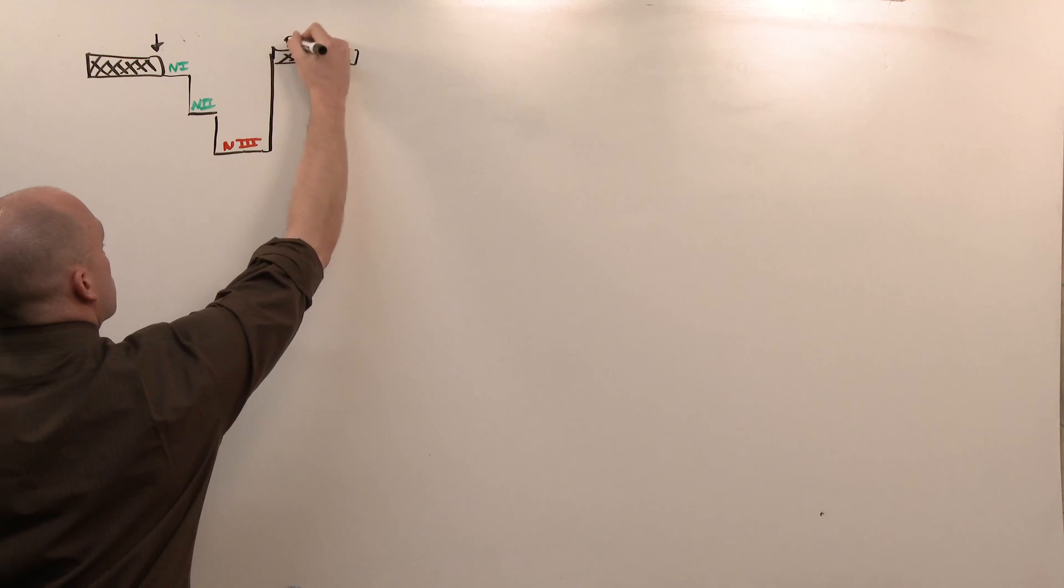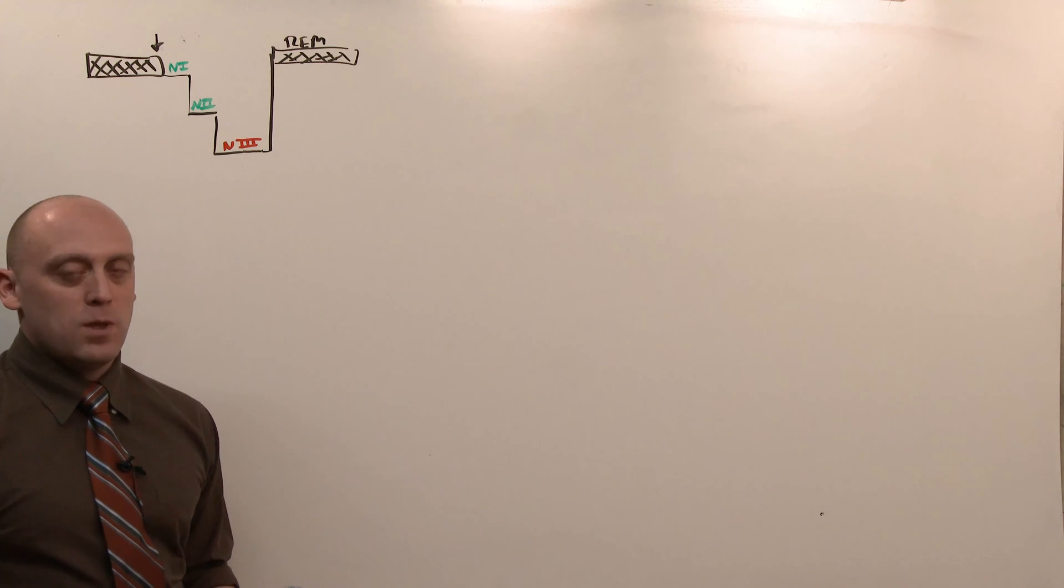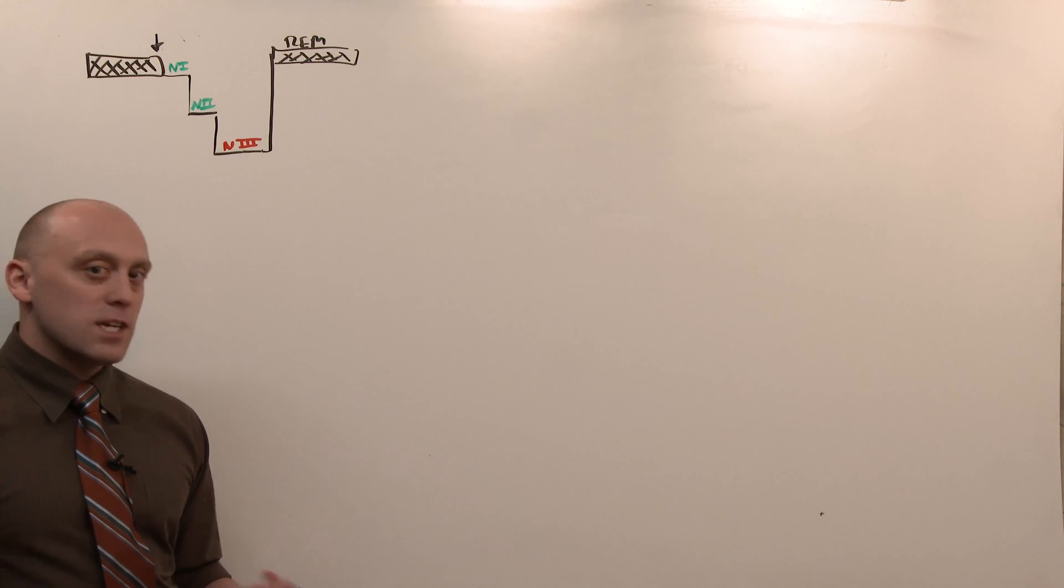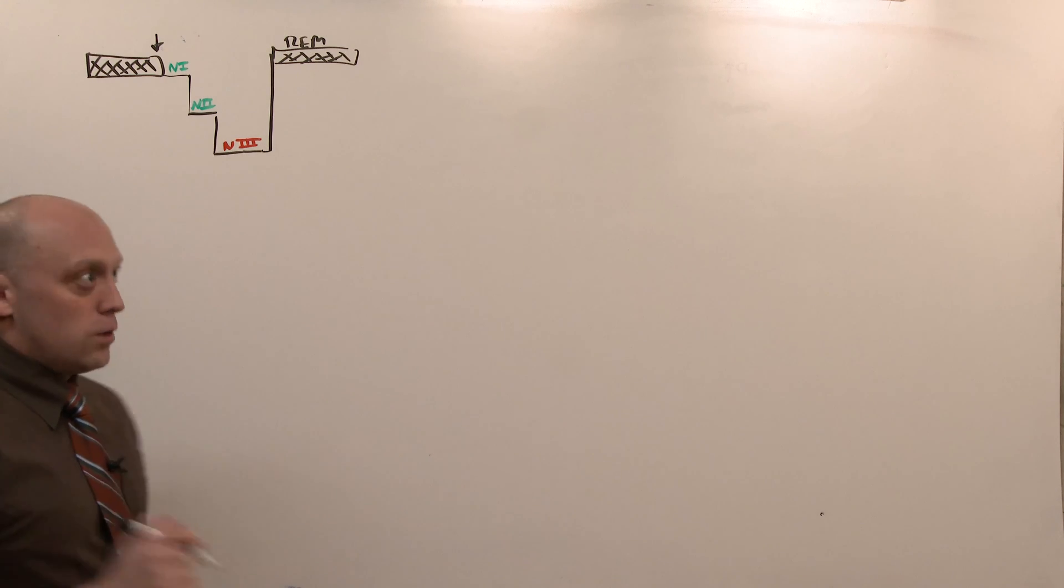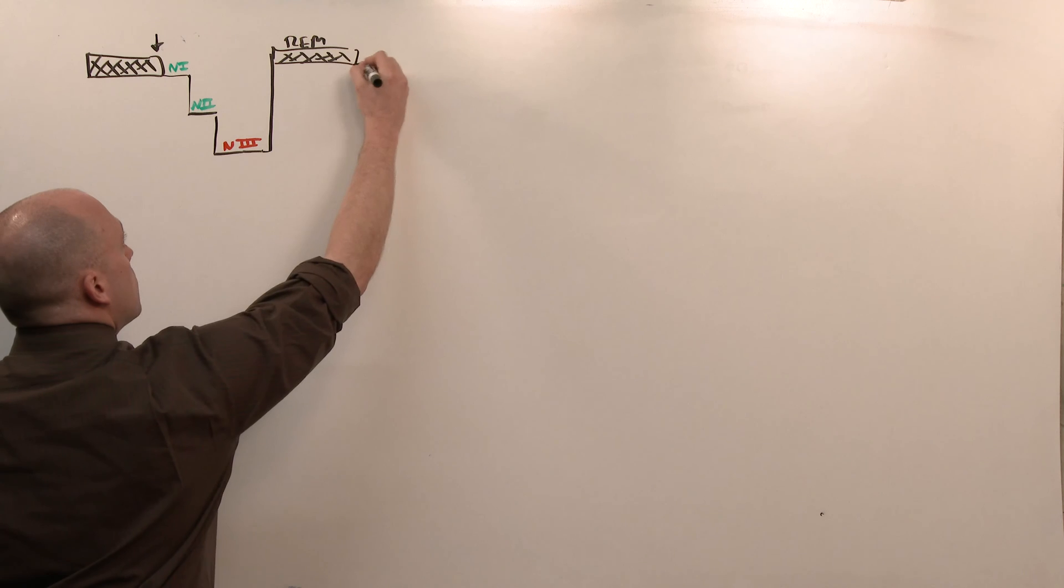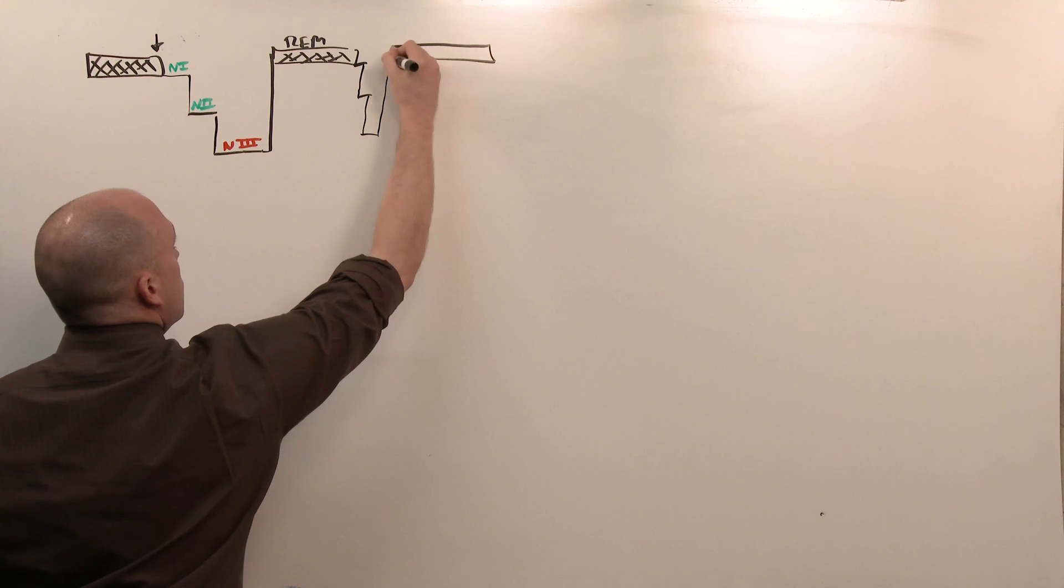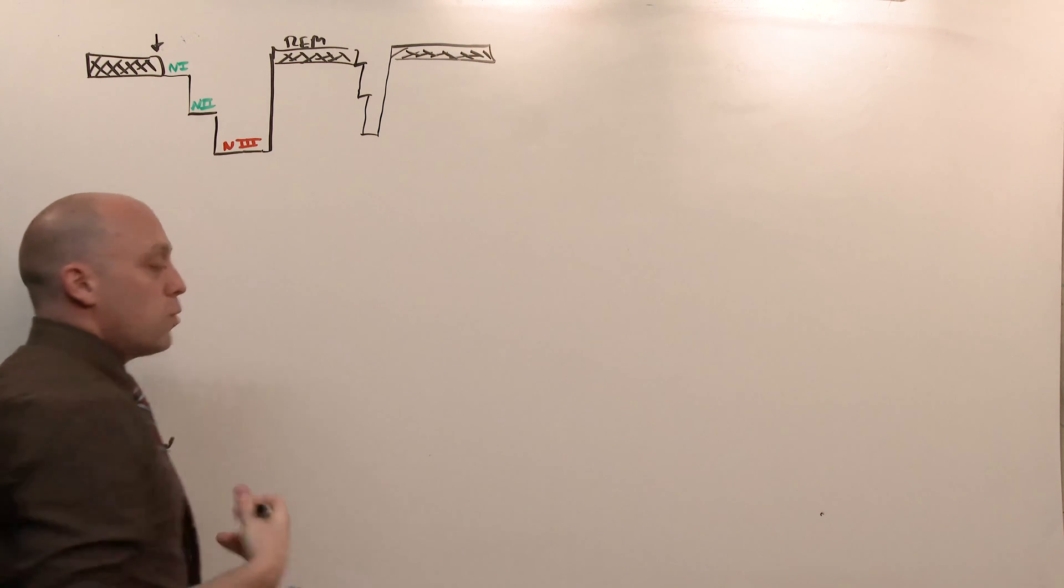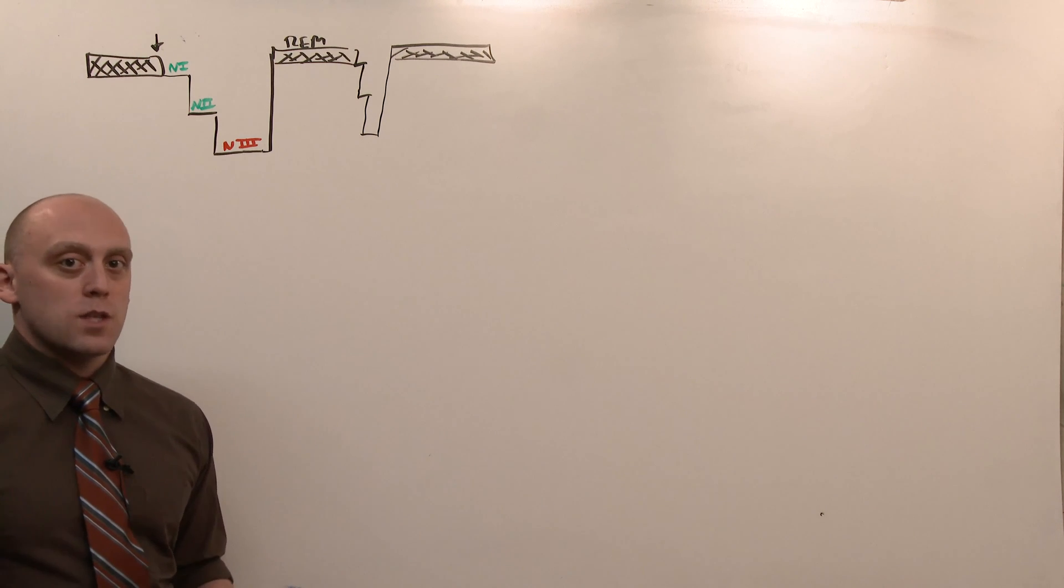REM is the restful sleep. REM is called REM because it is rapid eye movement on EMG. The others are non-REM sleep. REM is the most restful period where your brain engages memories, processes the day, and actually gets restful sleep. The longer you are in sleep, the shorter the duration of the non-REM sleeps and the longer the duration of REM. The longer you are asleep, the more time you'll spend in REM, the more REM periods you'll have, and the more restful the sleep is.